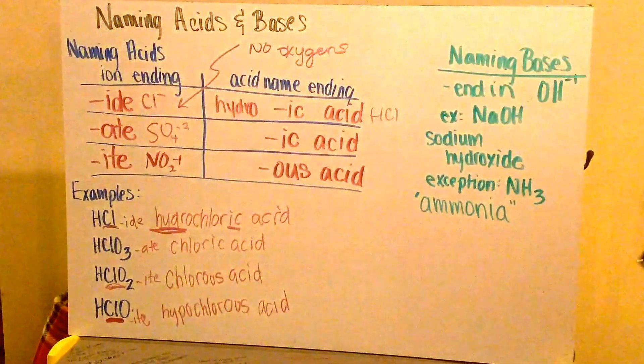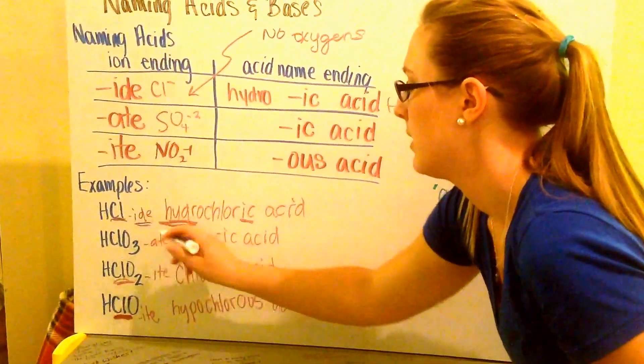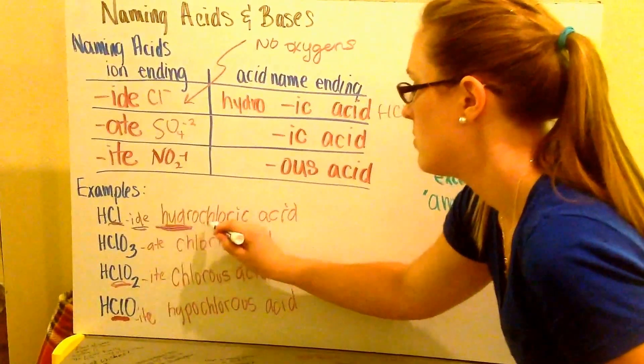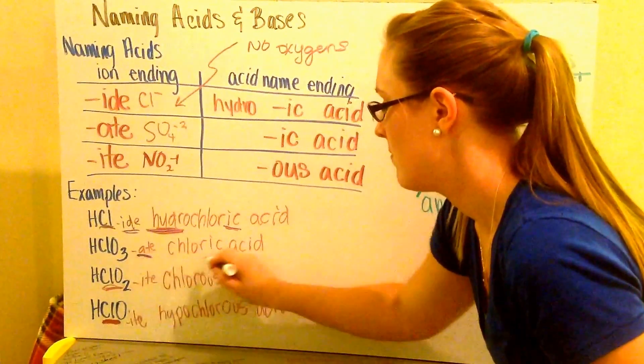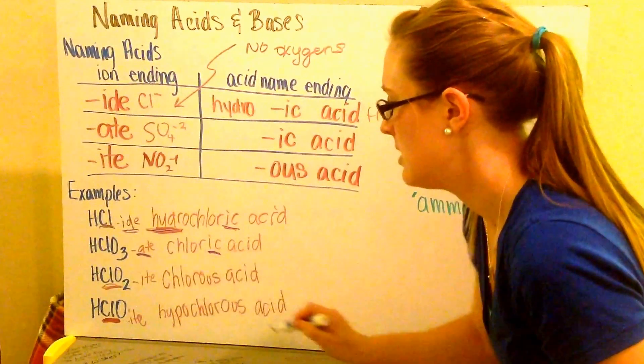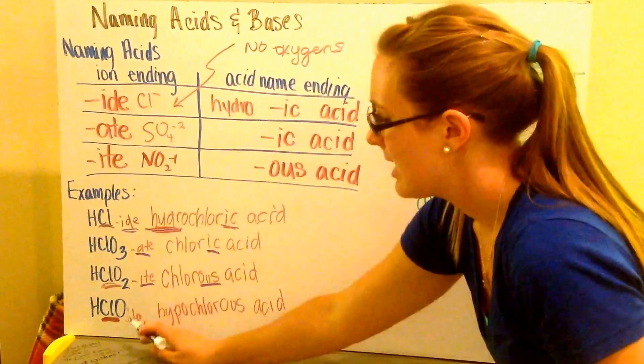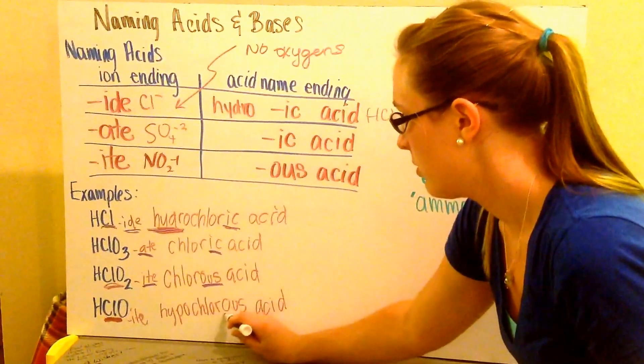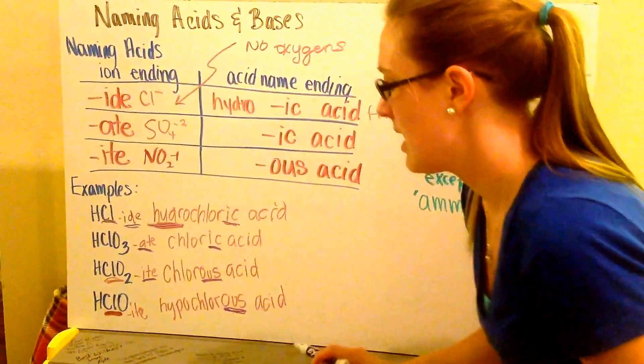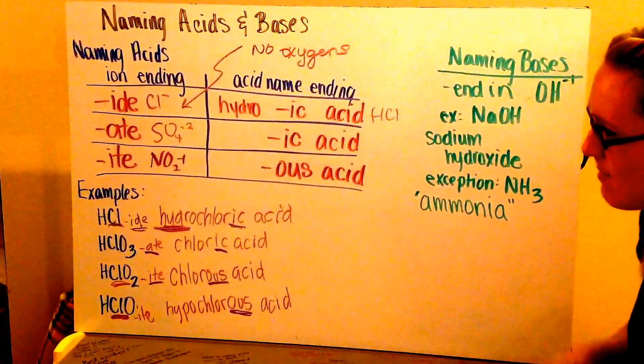So you can see from here, my IDE ending gave me hydrochloric acid. My ATE ending gave me chloric acid. My ITE ending gave me chlorous acid. And again, even though this is hypochlorite, I still get hypochlorous acid. So it's just my ending that tells me what kind of acid name I will have.